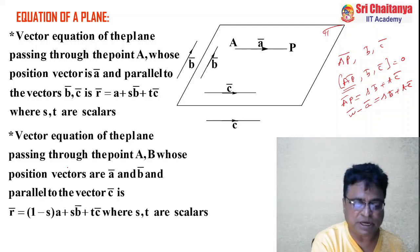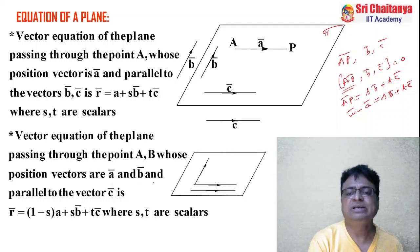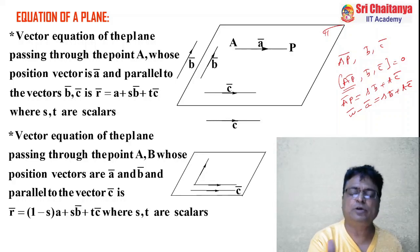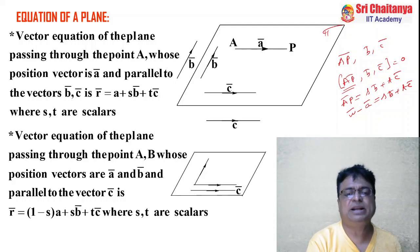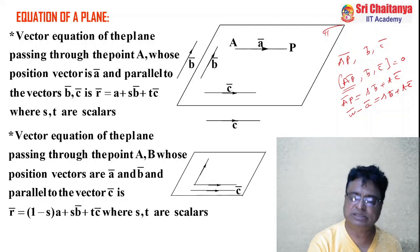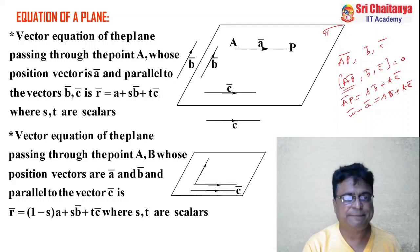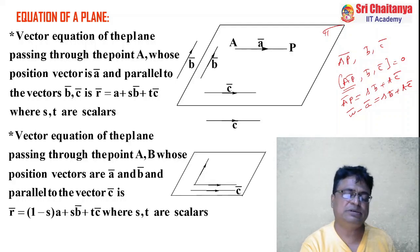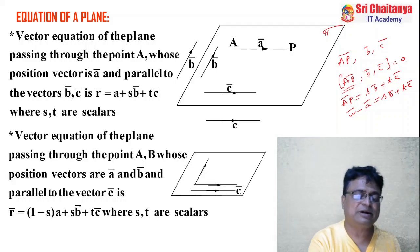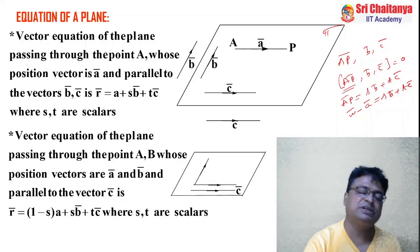Vector equation of the plane passing through two points A and B whose position vectors are ā and b̄ and parallel to a vector c̄. The same formula applies: r̄ = (1 - s)ā + sb̄ + tc̄. To verify, set ā = a₁i + a₂j + a₃k, b̄ = b₁i + ... and r̄ = xi + yj + zk. Compare i, j, k coefficients and you will get the equation of the plane in Cartesian form.